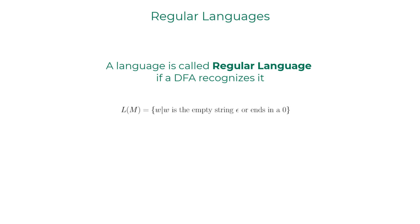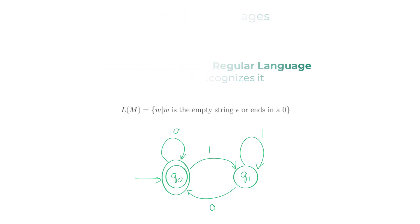This machine accepts the empty string or strings that end in 0. We can construct a DFA that recognizes this language. Clearly it accepts the empty string or strings that end in 0. Therefore, the language L is a regular language.